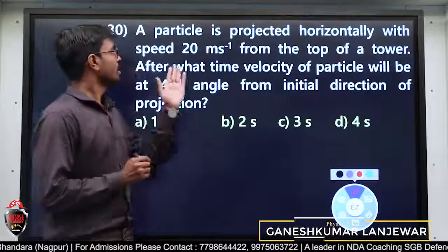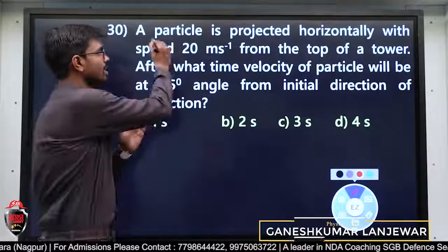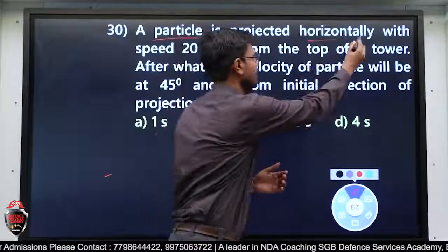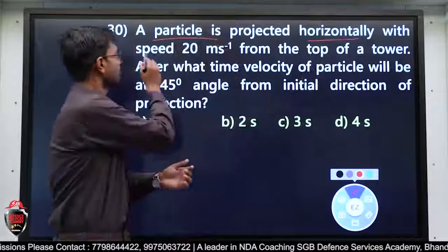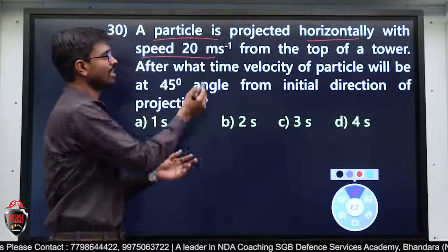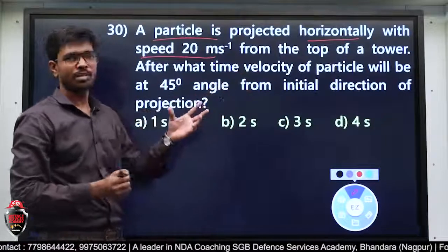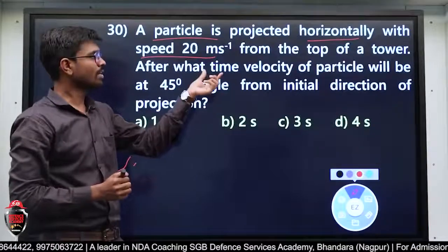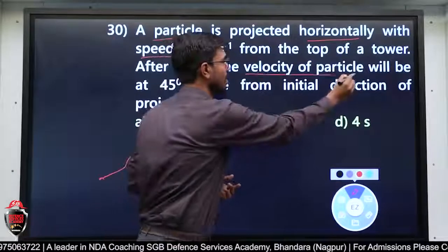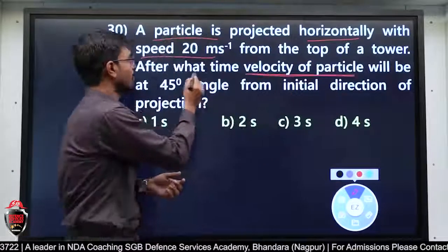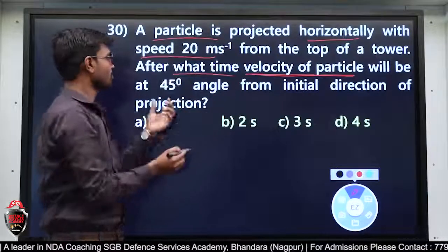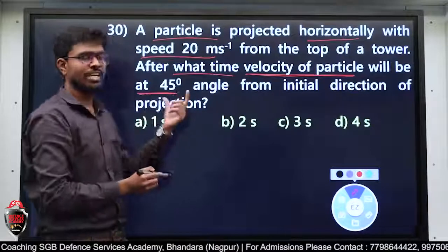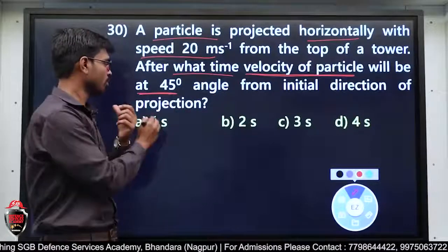Question में क्या दिया हुआ है: A particle is projected horizontally with speed of 20 meter per second from the top of a tower. After what time velocity of particle will be at 45 degree angle from initial direction of projection?